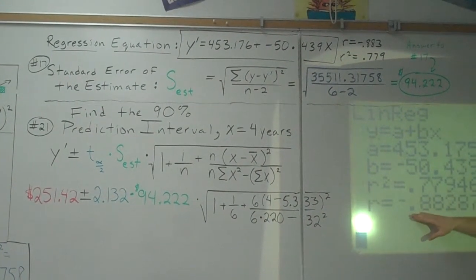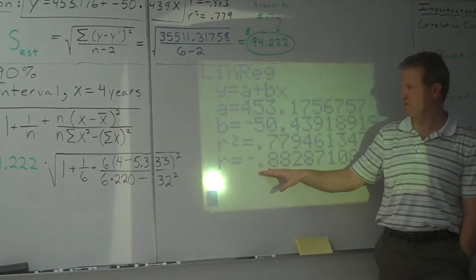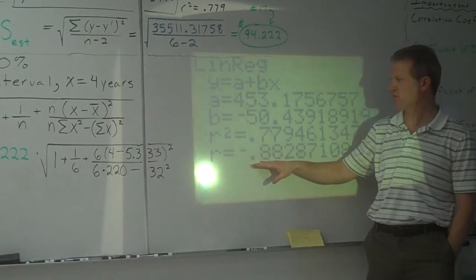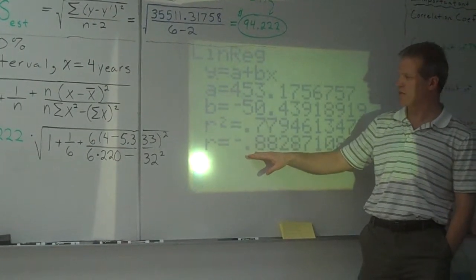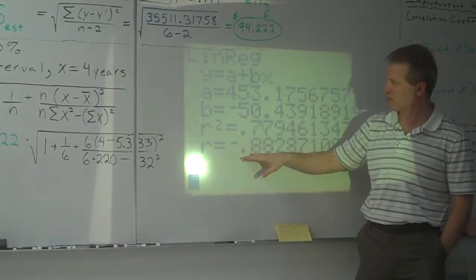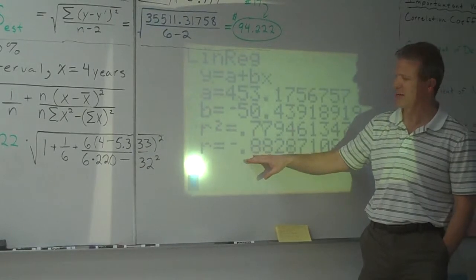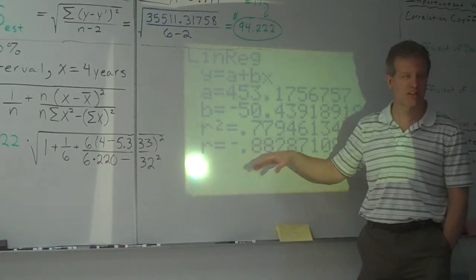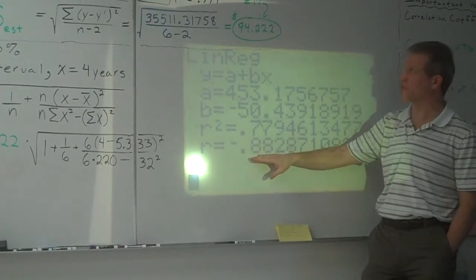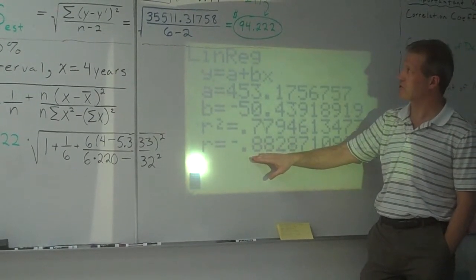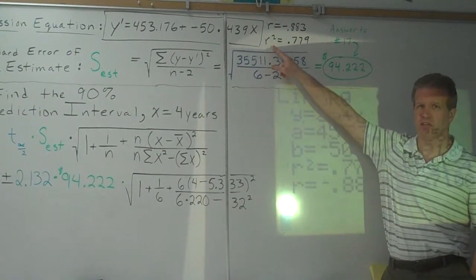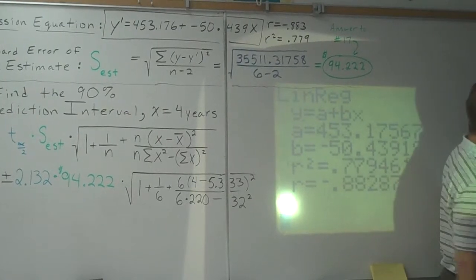There's the R value. That tells you whether there's a positive, strong positive linear relationship, a strong negative linear relationship, or no linear relationship. We're not going to take the time right now to go through finding the critical values and everything, but we're going to go with a strong negative linear relationship here to finish the problem. If you square it, that's your R squared. That's something else that we talked about a little bit yesterday. That's called the coefficient of determination.